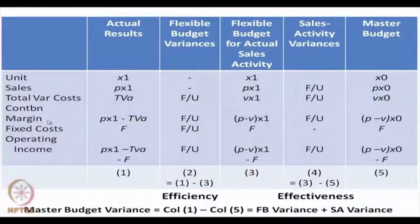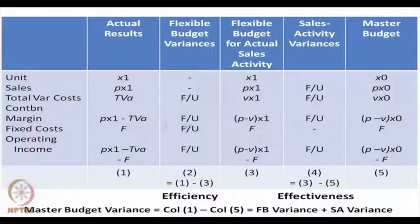Contribution margin is sales minus total variable cost. For actual results it is p × x₁ minus TVA; for the flexible budget it is (p − V) × x₁; and for the master budget it is (p − V) × x₀, assuming fixed cost is constant throughout. The operating income for each case then becomes contribution margin minus fixed cost.